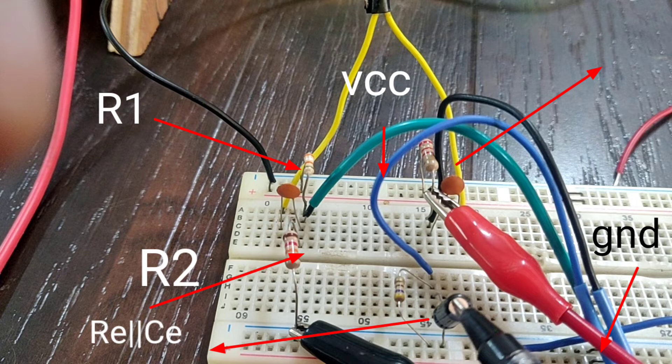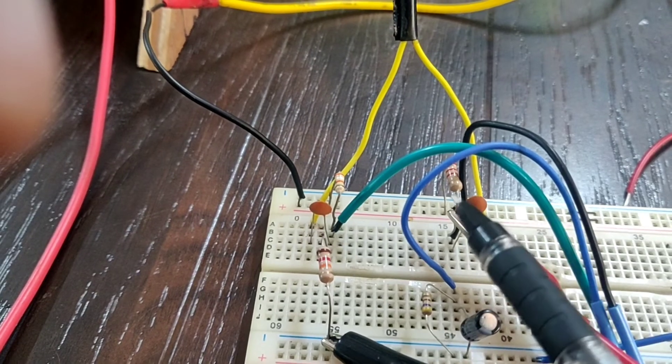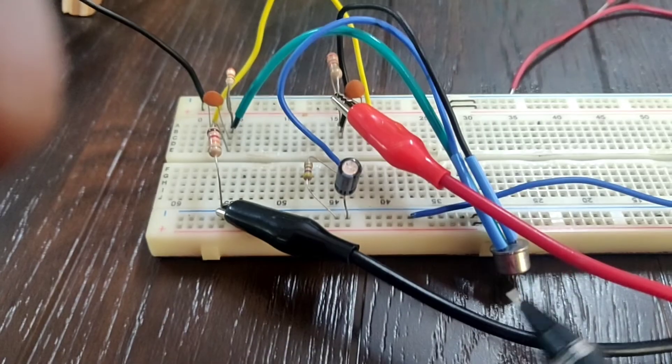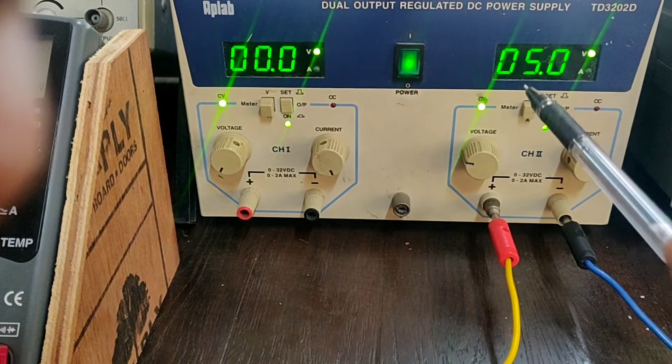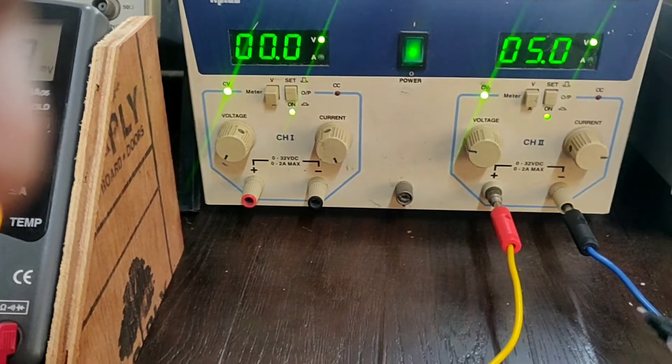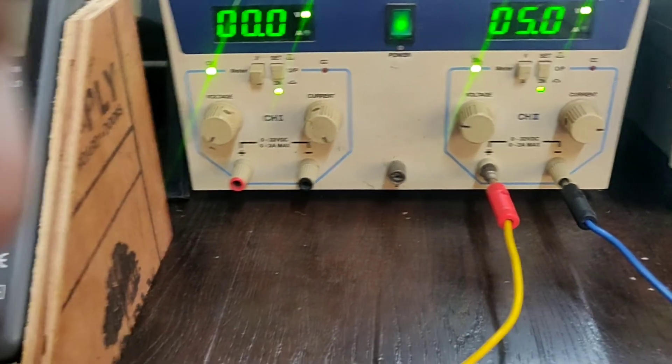Now you can see that the R1, R2 and RE parallel to CE, VCC all are copied according to the circuit diagram. SL100 is used as a transistor and plus 5 volts is connected as VCC and just switch on.